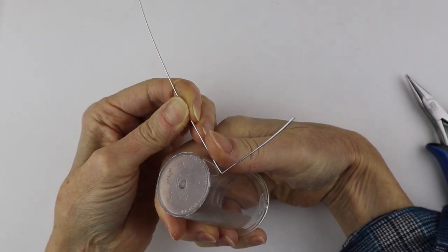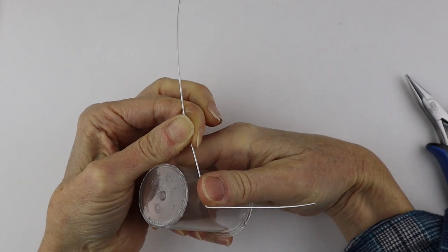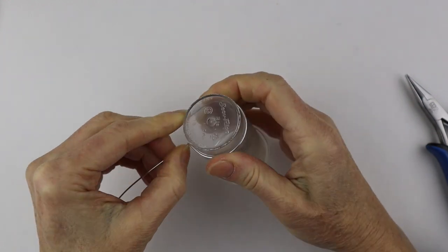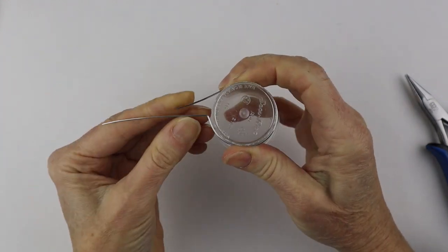your pill bottle, hold it with one thumb, and then just wind it around the edge like that.